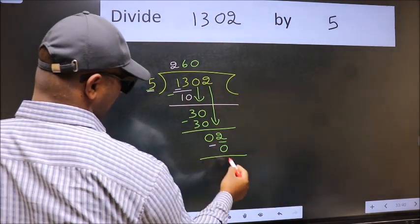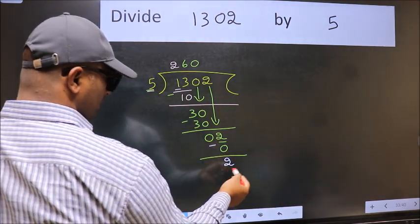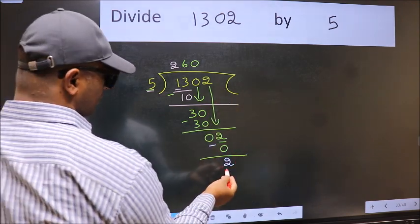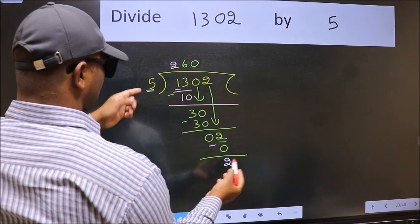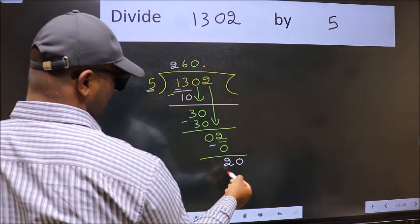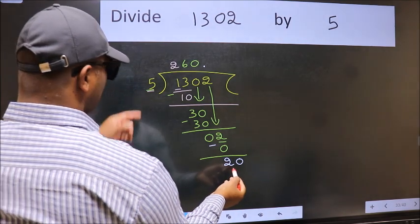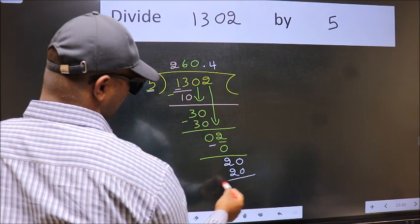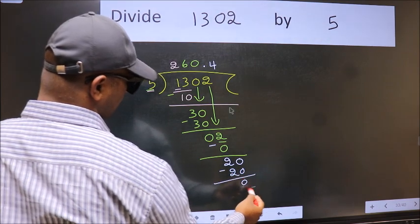Now we subtract, we get 2. Over here, we did not bring any number down, and 2 is smaller than 5. So now we can put dot and take 0. So, 20. When do we get 20 in 5 table? 5 times 4 is 20. Now we subtract, we get 0.